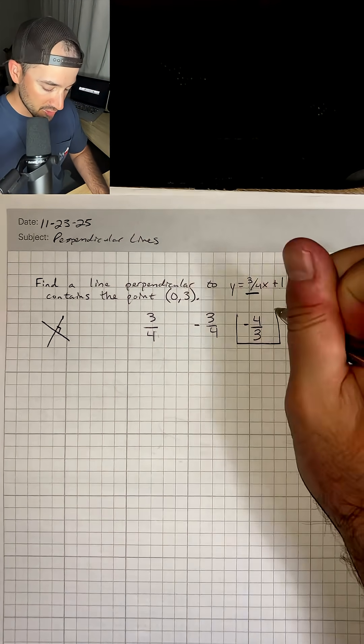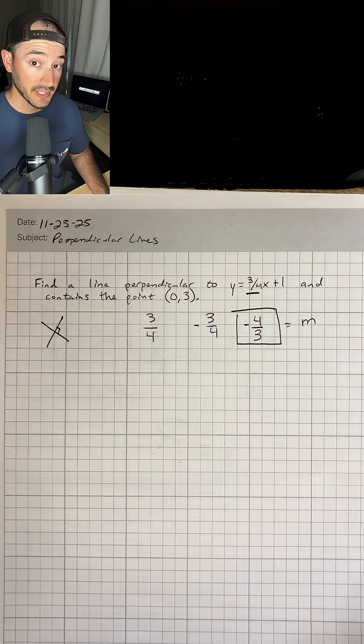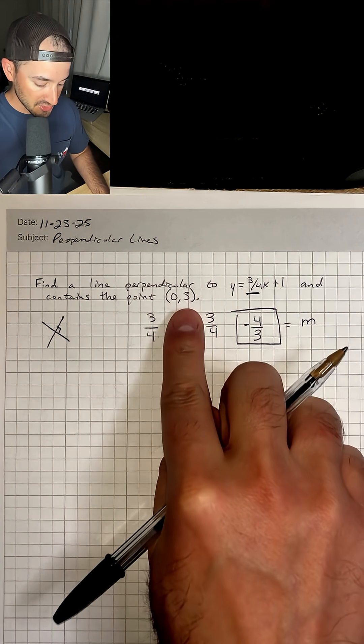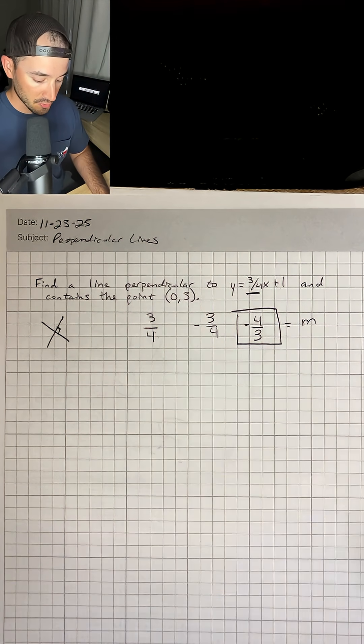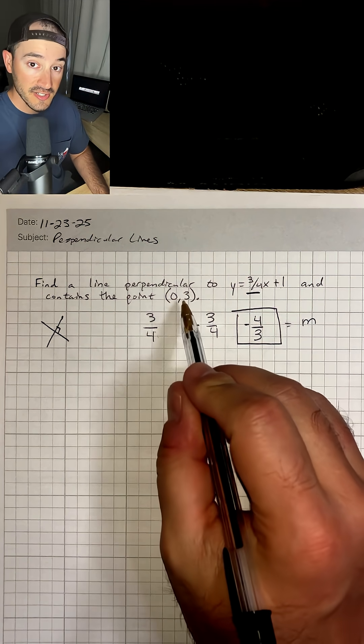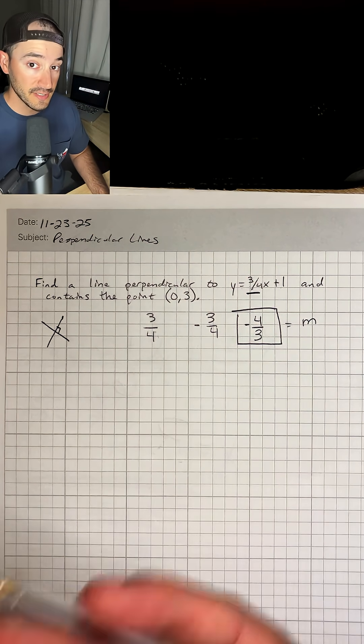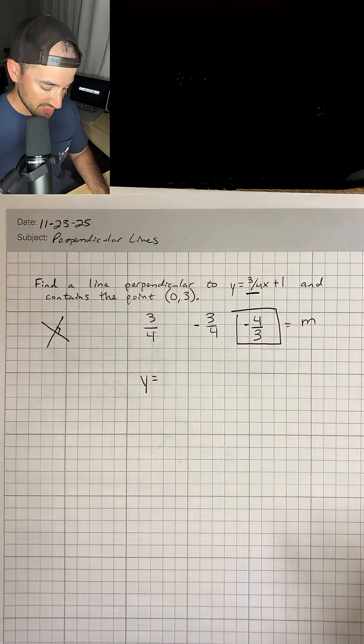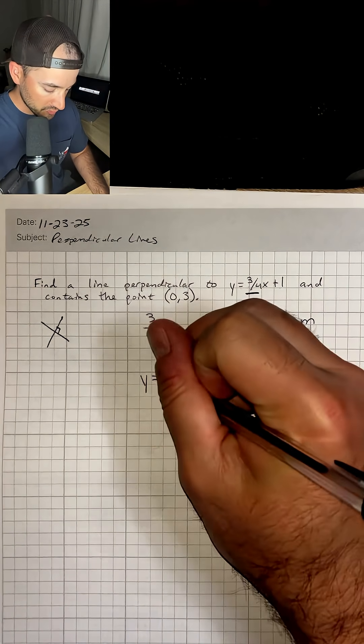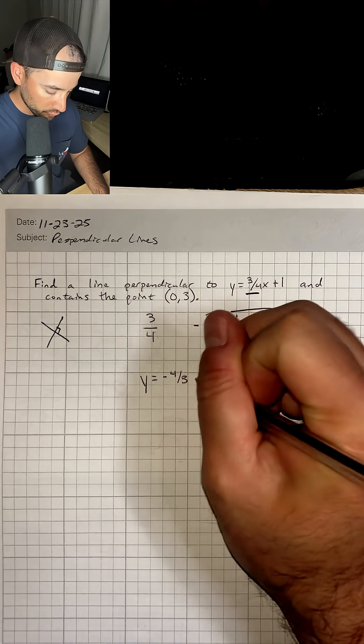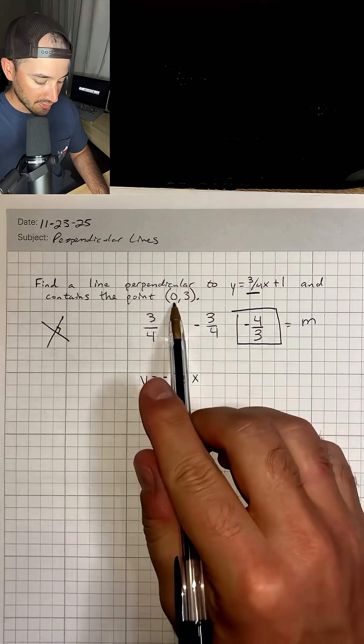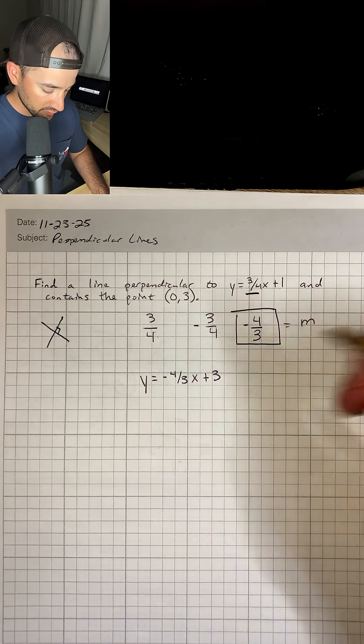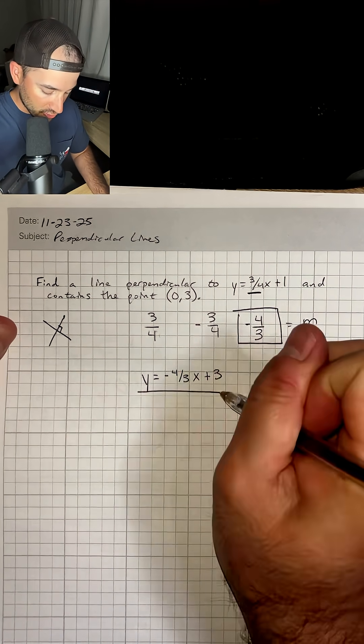That is going to be our new slope for our perpendicular line. They also give us the point (0,3), which is our y-intercept. So now we can just plug in our slope and our y-intercept to y equals mx plus b and that will be our answer. So y equals m is our new slope, which is negative 4/3x. And then our y-intercept is 3, so we're going to put plus 3, and that is all we have to do. That is our answer.